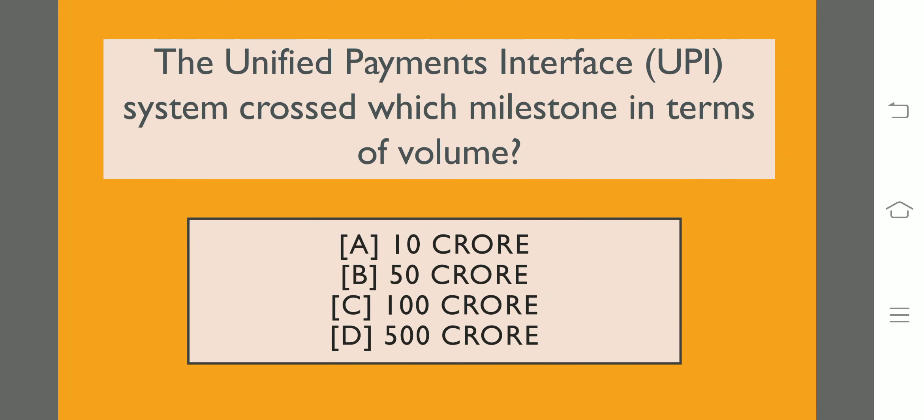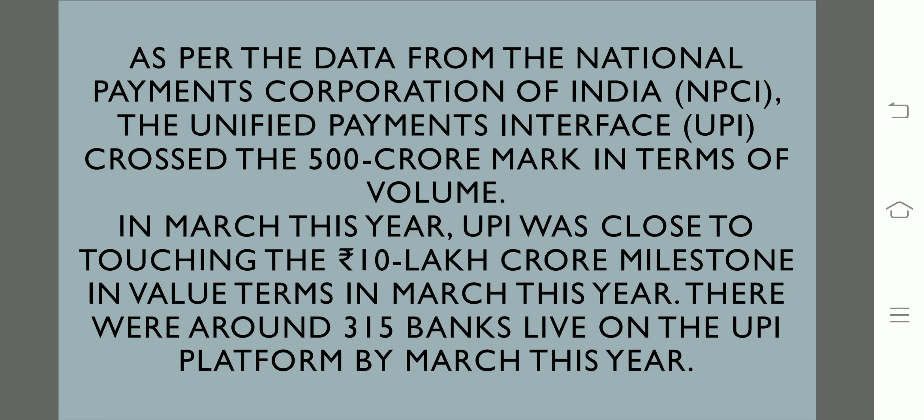The United Payments Interface, UPI system, crossed which milestone in terms of volume? UPI crossed the 500 crore transactions milestone. As per data from the National Payments Corporation of India, NPCI, UPI crossed the 500 crore mark in volume in March this year. UPI also came close to touching the 10 lakh crore milestone in value terms in March. There were around 315 banks live on the UPI platform by March 2022.